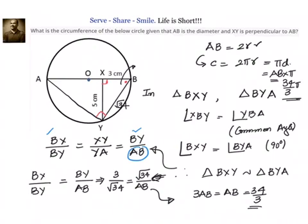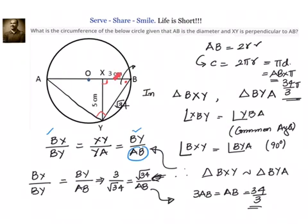Let us have a recap. We have been given a circle in which AB is perpendicular to XY, AB is the diameter, BX is 3 and XY is 5. By Pythagoras theorem, BY is root 34. We have to find the circumference. We see two similar triangles, both having common angle B and both having 90 degrees. We wrote those two triangles as similar by AA similarity criteria. Writing corresponding sides in proportion, we get BX into AB equals BY squared. We know BX and XY, so BY is found by Pythagoras, giving AB equal to 34/3. The circumference is π into diameter, which equals 34π/3.